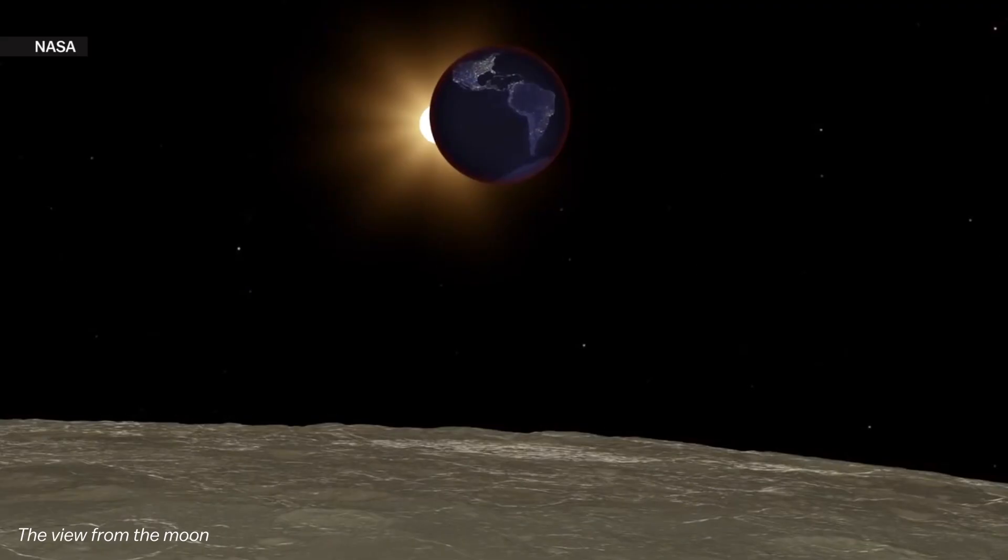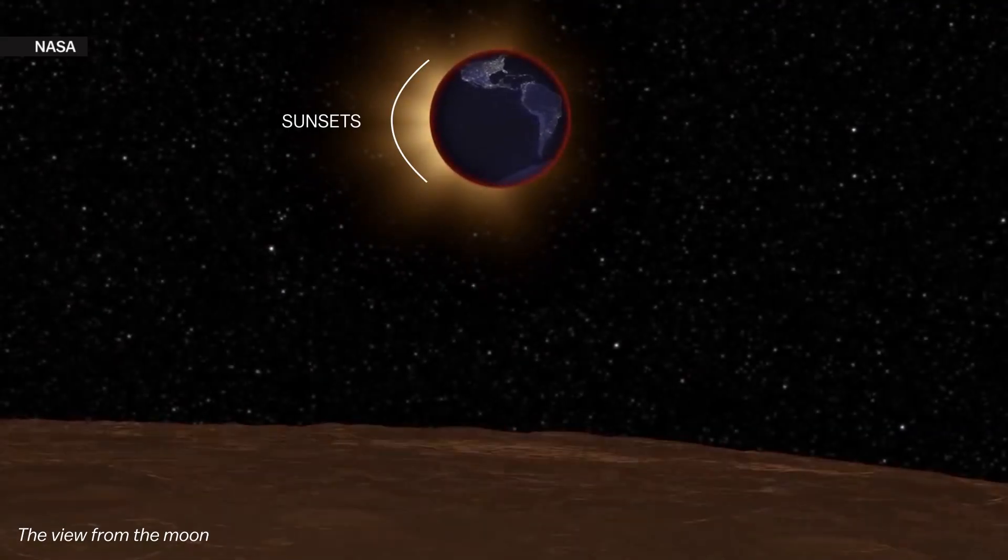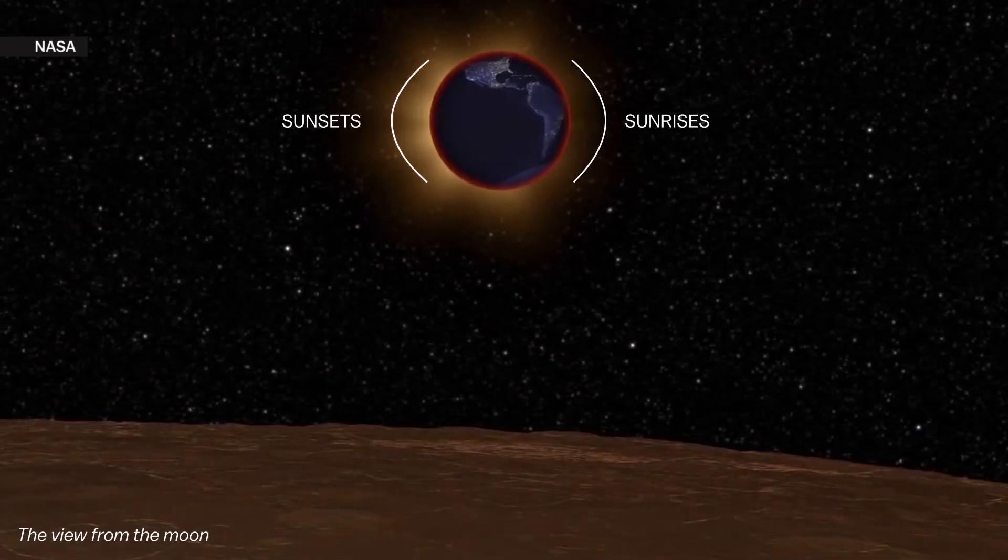Or to put it another way, during a total lunar eclipse, the sun projects all of the world's sunsets and all of the world's sunrises onto the moon at the same time.